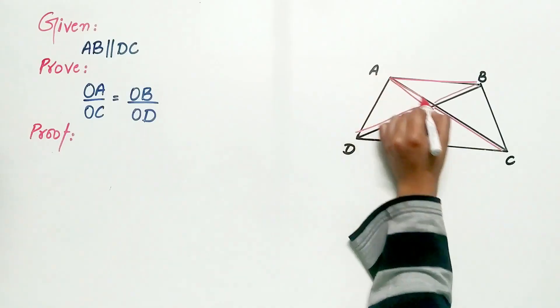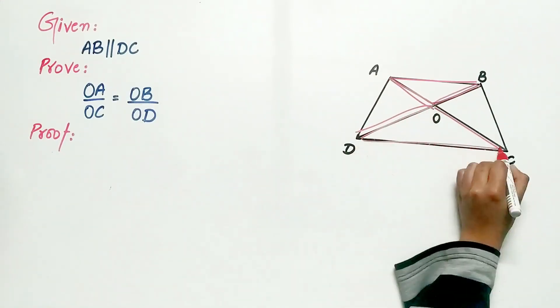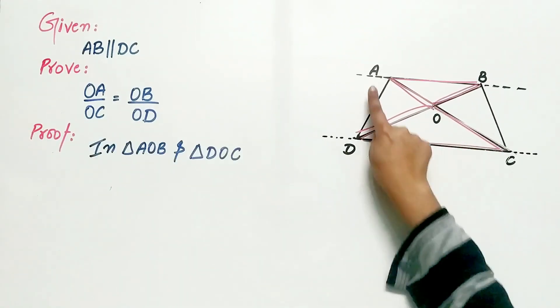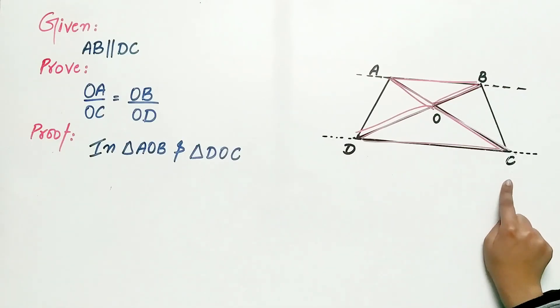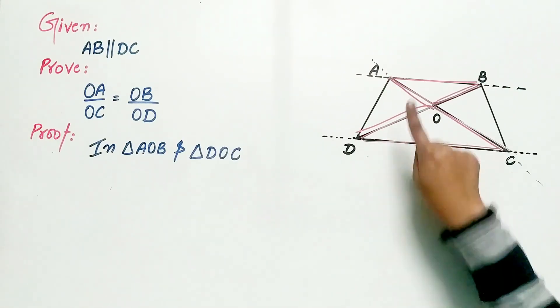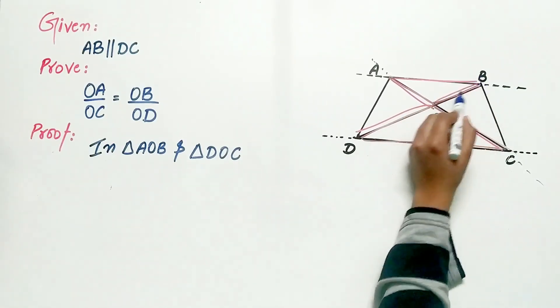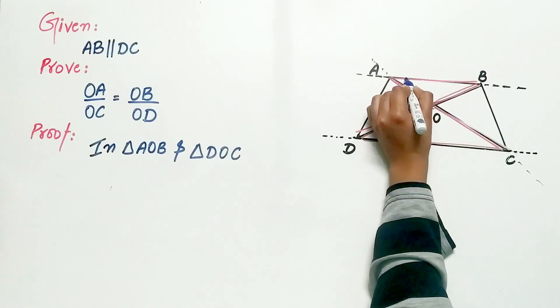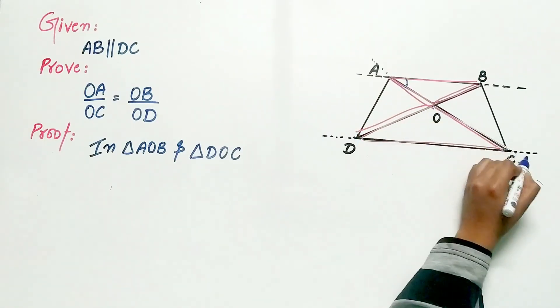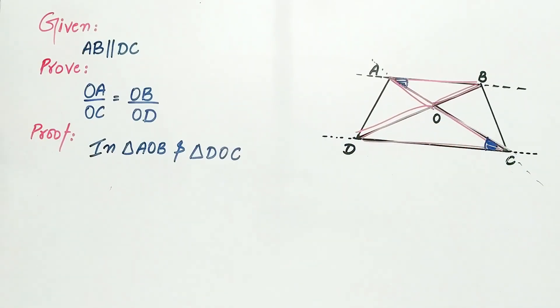Now look at these two triangles, triangle AOB and triangle DOC. We know AB is parallel to DC. AC is a transversal that intersects these two lines. So angle BAO is equal to angle OCD. Why? Because of alternate interior angles.